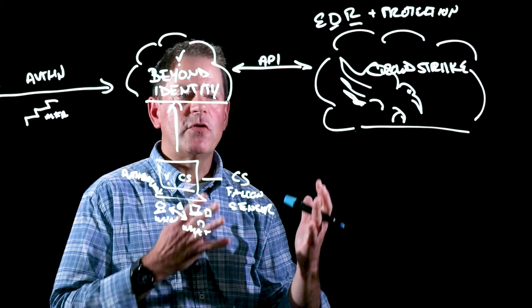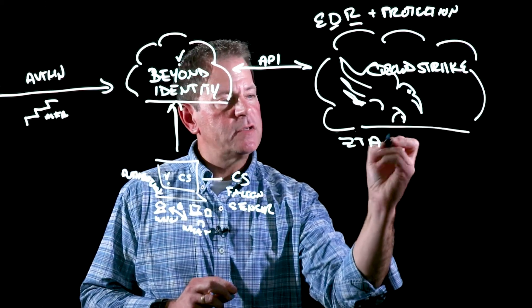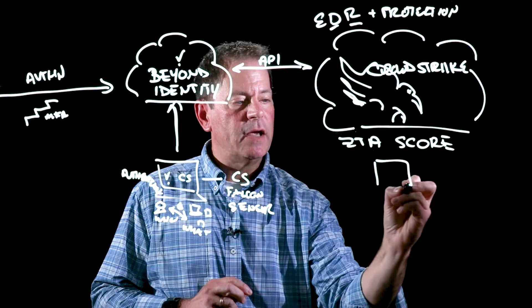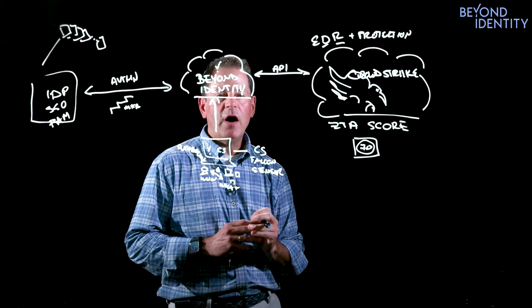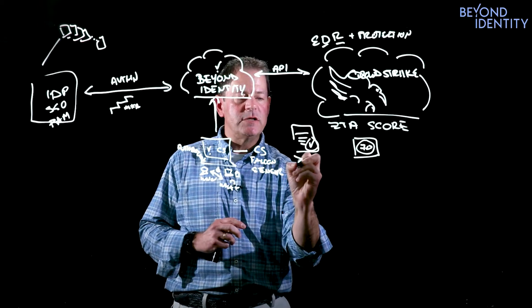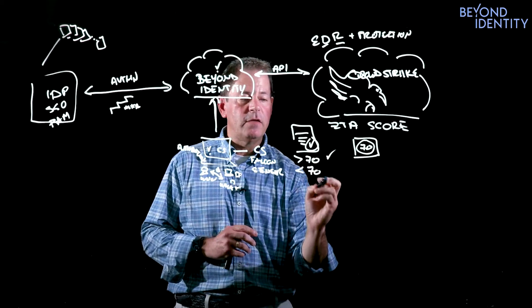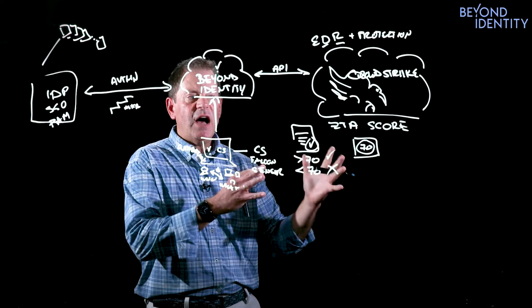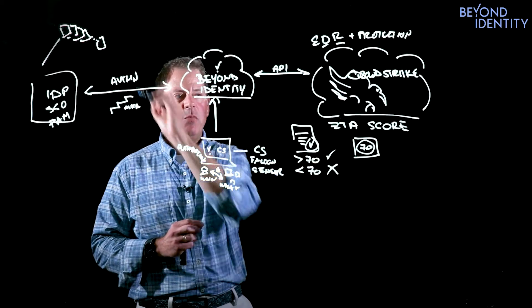And we've taken that even a step further to truly assess the risk signals. CrowdStrike has developed the concept of a zero trust assessment score, which takes the variety of factors that they are gathering and actually assembles that into a score, that this is a 70 out of 100. And what Beyond Identity has done is incorporated that into our policy engine to say, exceed 70, provide access. If it doesn't meet that ZTA score, then deny access, giving organizations even higher degrees of confidence around the device and what is happening on that device at the point of authentication.